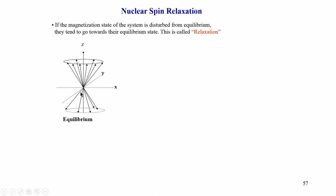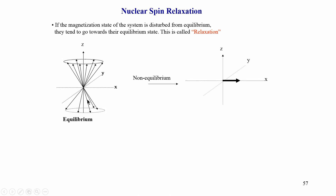Each vector represents one particular atom in the molecule, and these are different molecules. Combining these two states gives what is called a net magnetization vector pointing along the z-axis — the equilibrium magnetization. When we apply a pulse, we bring the magnetization to the x or y axis depending on the phase of the pulse.